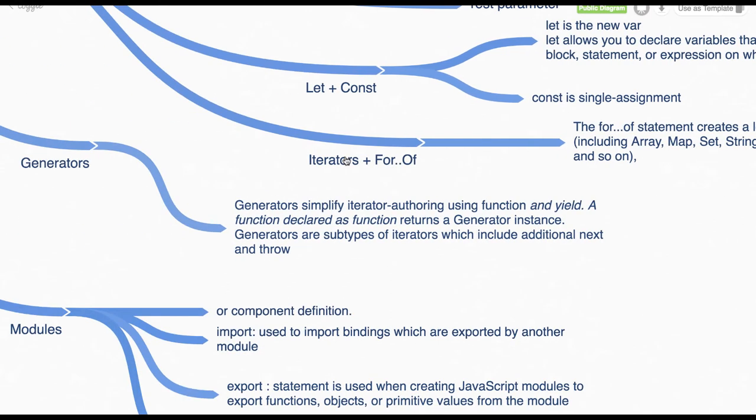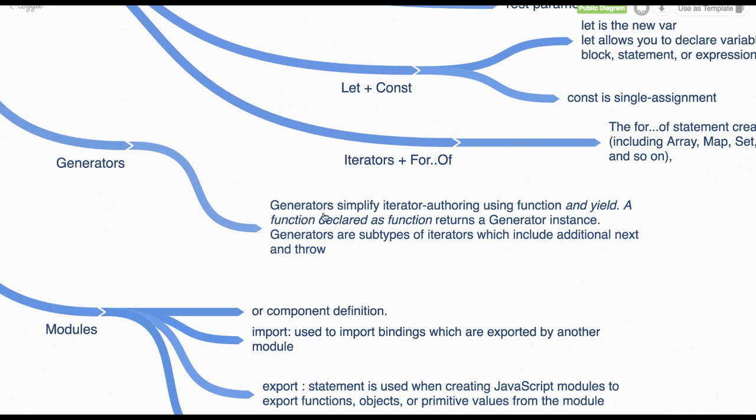So generators simplify iterator authoring using functions and yield. So we talked about generator functions which use the asterisk symbol with the function, and that function is yielding some values. Those values actually become a collection of iterable objects and then we can iterate.